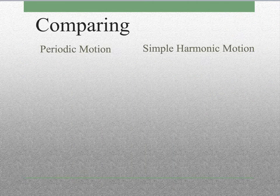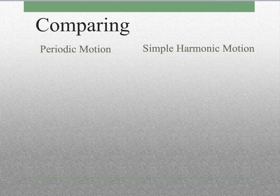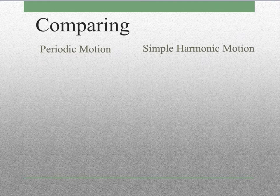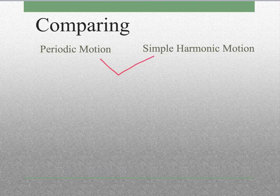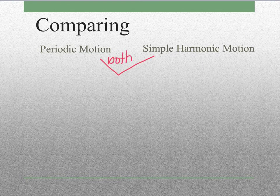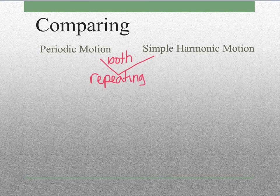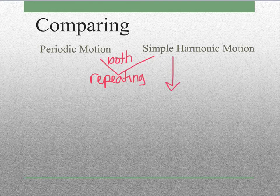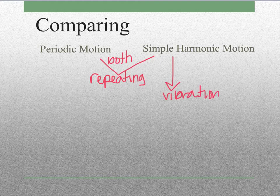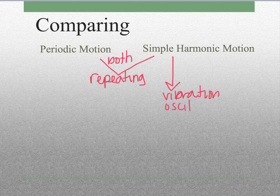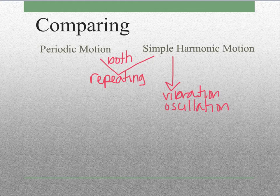So let's compare and pause here and compare simple harmonic motion and periodic motion. So when we talk about them, the thing that they both have is this repeating motion. But simple harmonic motion, this repeating motion needs to be a vibration or an oscillation, meaning it goes back and forth repeatedly, kind of like tapping your foot on the floor. That's a repeated motion.